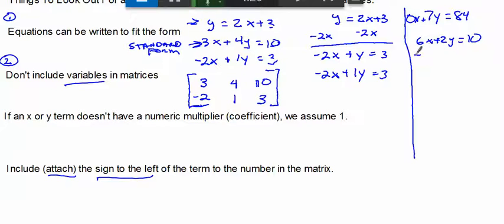So if I had to rewrite this as a matrix, this would simply become 0, 7, 84, and 6, 2, 10. Thank you.